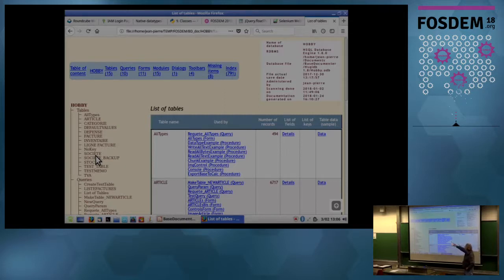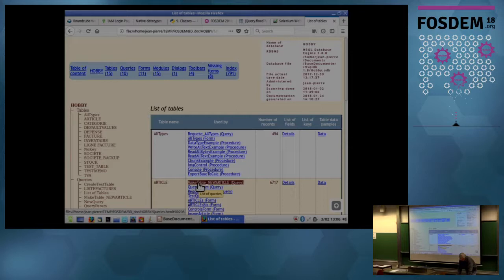And here a very easy list of tables. Table name. Then used by, because of course a table never uses something else, but it's often used by a number of items. And, for instance, here I have table article, which is used by a query called makeTable1.